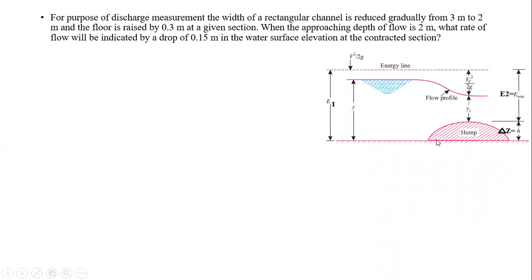What rate of flow will be indicated by a drop of 0.15 m in the water surface elevation at the contracted section? The discharge Q is to be calculated based on this 0.15 m reduction in the water surface elevation at the contracted section.